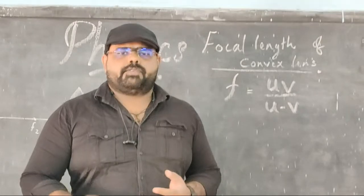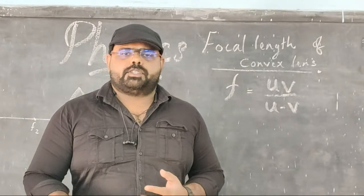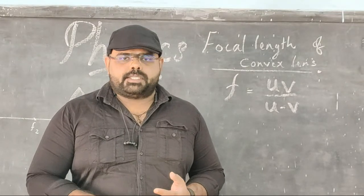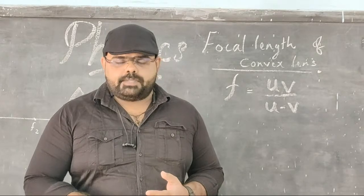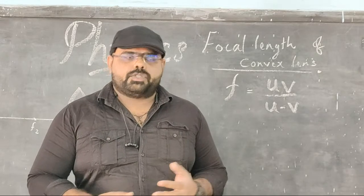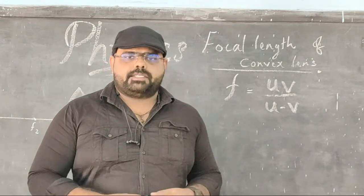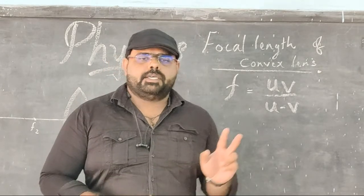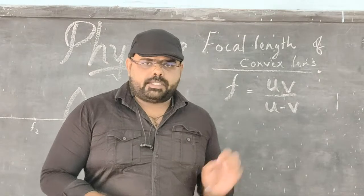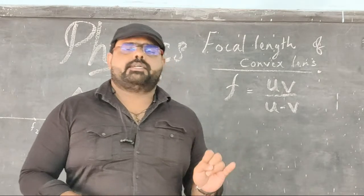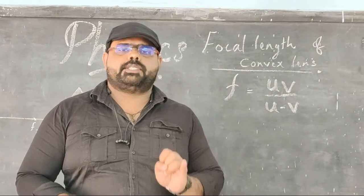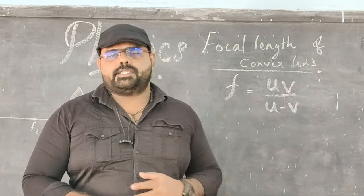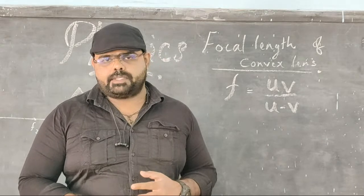Now let us understand what the different methods are for finding the focal length. There are different methods: the distant object method, the UV method, and the auxiliary method. For our practical syllabus, we are going to discuss two methods — one is the distant object method and the second one is the UV method.